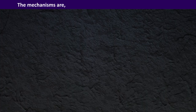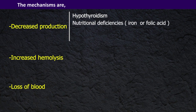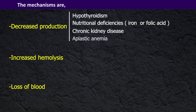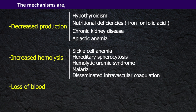The mechanisms are decreased production, increased hemolysis, and loss of blood. Hypothyroidism, nutritional deficiencies like iron deficiency or folic acid deficiency, chronic kidney disease, and aplastic anemia are examples of decreased production. Causes for hemolytic anemias include sickle cell anemia, hereditary spherocytosis, hemolytic uremic syndrome, malaria, and disseminated intravascular coagulation.